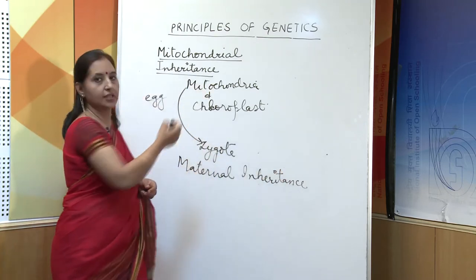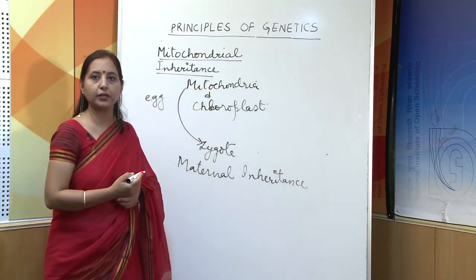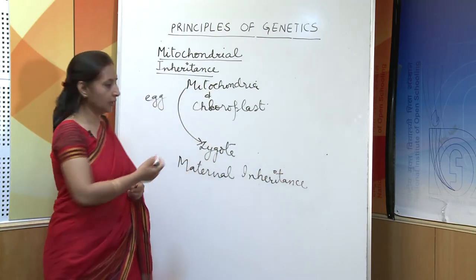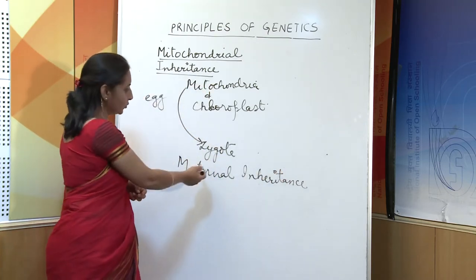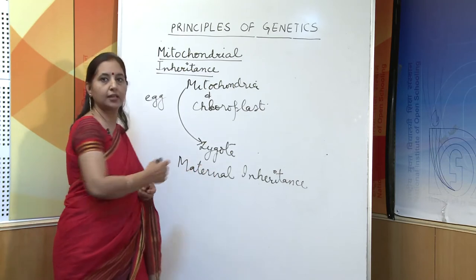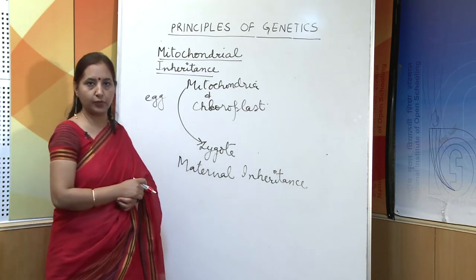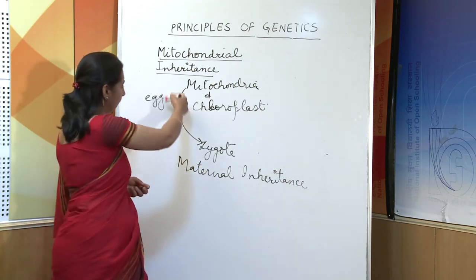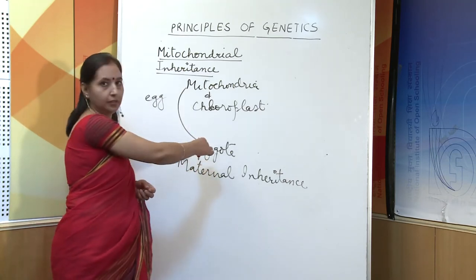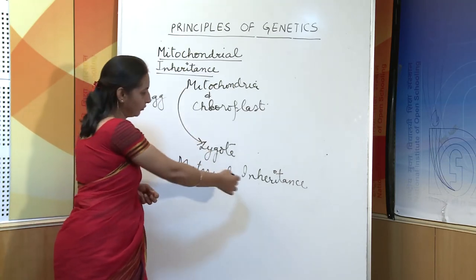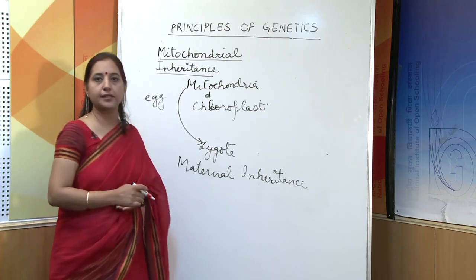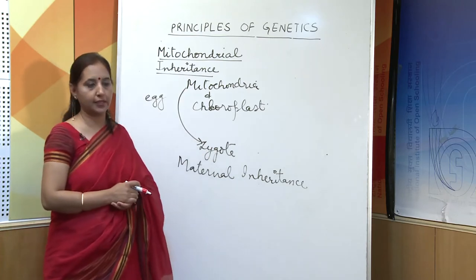Any defective gene present in the mitochondria can give rise to a defect in the individual through the egg of the mother, and therefore it is called maternal inheritance.